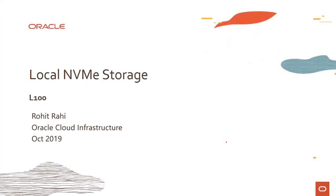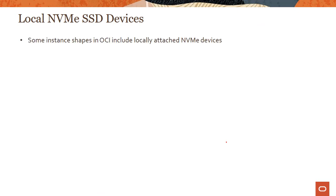Now let's talk about local NVMe storage. In this section we'll cover local NVMe storage, and in the next module we'll talk about block volumes. In OCI, some instances have locally attached NVMe devices.